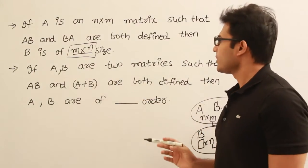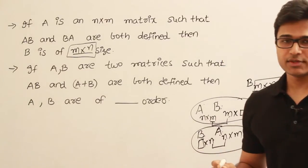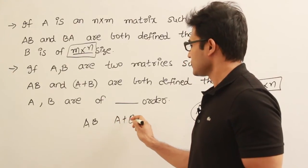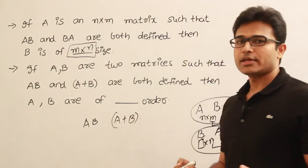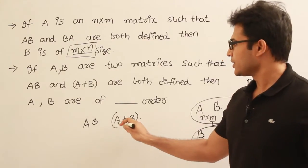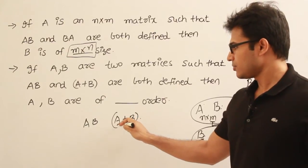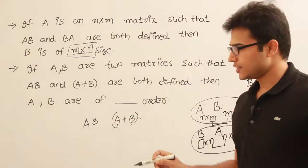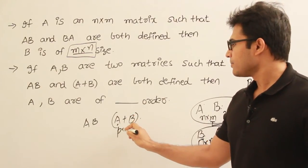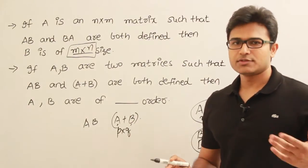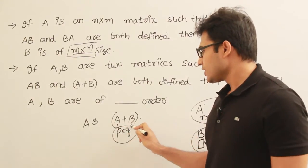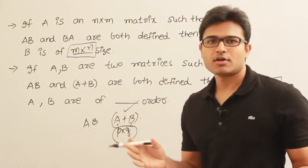The next question: if A and B are two matrices such that AB is possible as well as A plus B is also possible. We know that matrices are conformable for addition only when their sizes are the same. Therefore, since they are conformable for addition, both A and B must be of the same size. Let's say both sizes of A and B are P by Q.